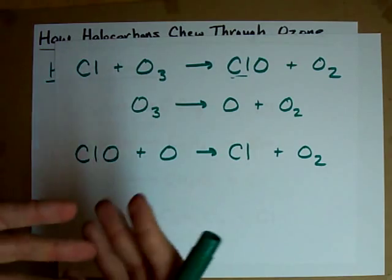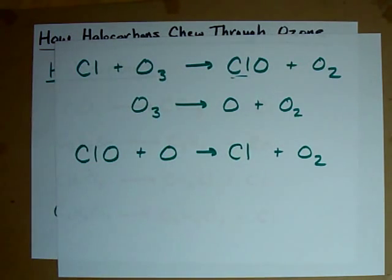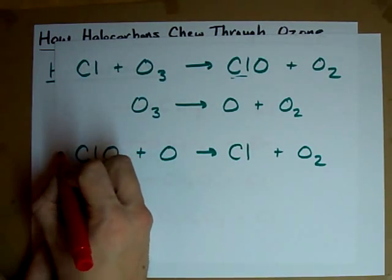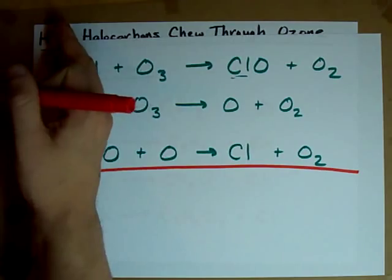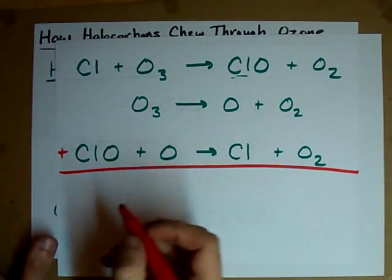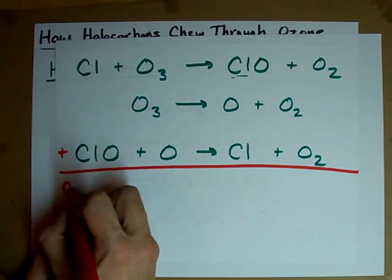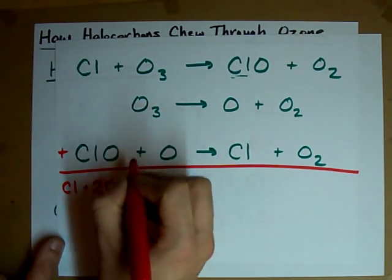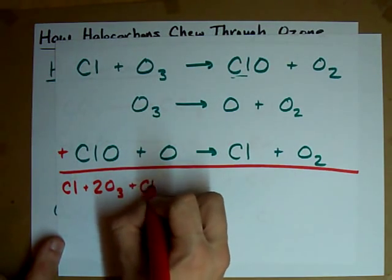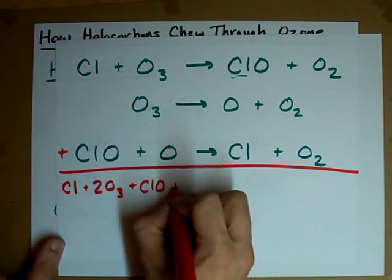Chlorine is actually a catalyst for this destruction of ozone here. In fact, if we were to add up all of these chemical reactions, everything on the left and everything on the right, what you'll notice is that you have Cl on the left, two ozones on the left, a ClO on the left, and an O.